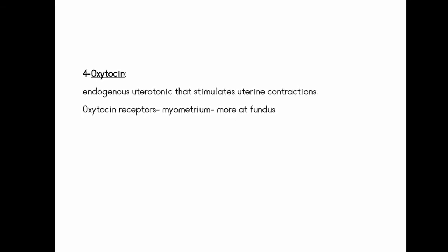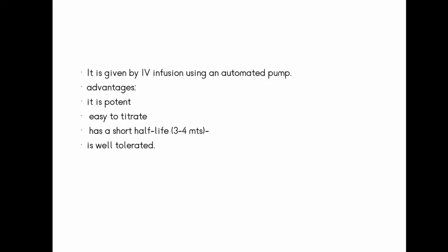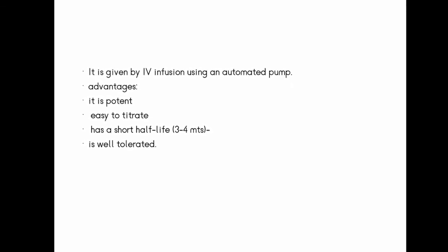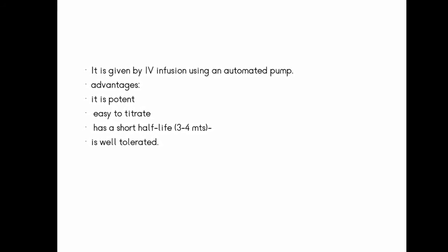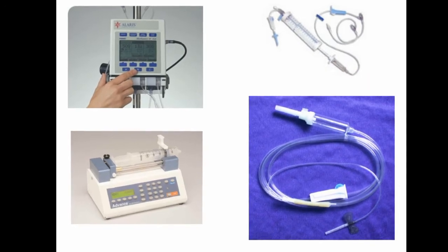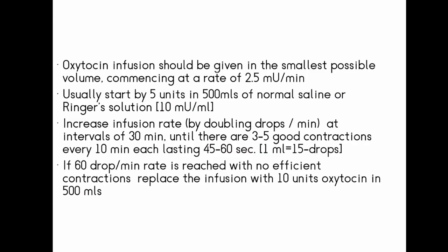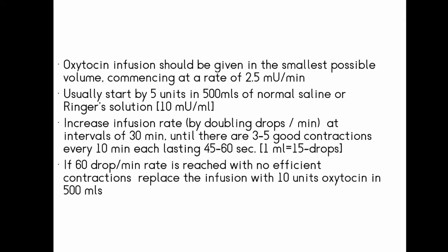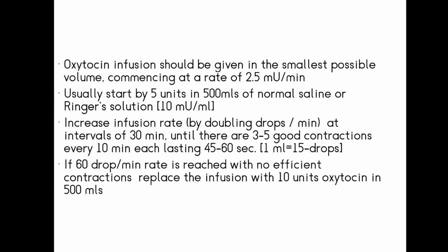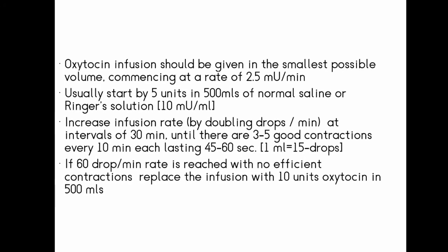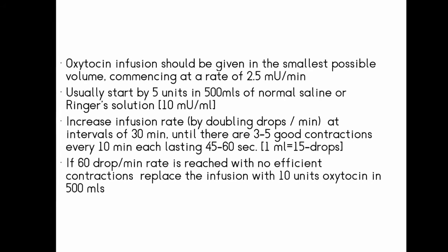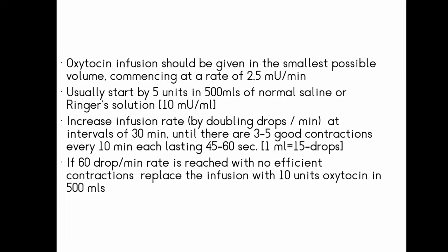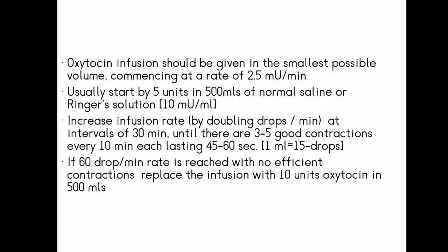Oxytocin is an endogenous uterotonic agent. It causes uterine contractions and is given as an IV infusion. It is easy to titrate and has a short half-life. Typically, 5 units of oxytocin is diluted in normal saline, and the infusion rate is increased at 30-minute intervals. Doses of 5 to 10 units are commonly used.